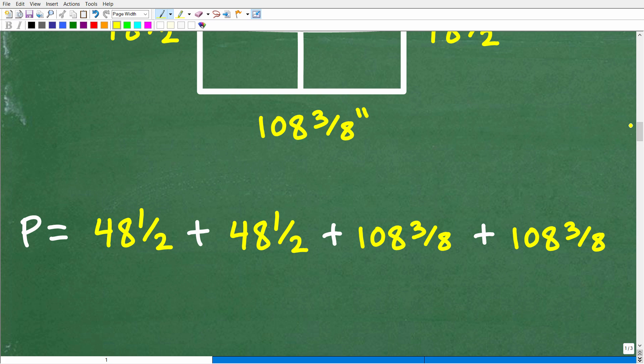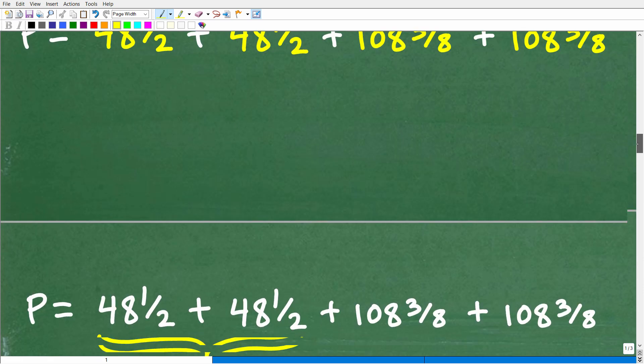Alright, so the perimeter is going to be equal to 48 and 1 half inches, plus 48 and 1 half, plus 108 and 3 8ths, plus 108 and 3 8ths. Okay, so we have to deal with this fraction problem. And there's different ways you can go about doing this. But let me go ahead and show you the way I'm going to approach it.